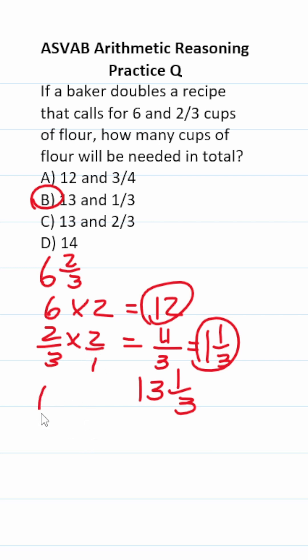The other way is to do it like this. We have six and two-thirds. Convert this to an improper fraction. Six times three is eighteen plus two is twenty over three.